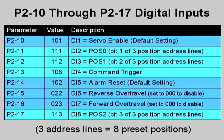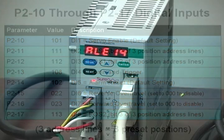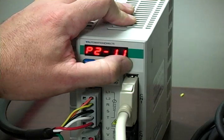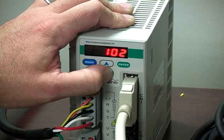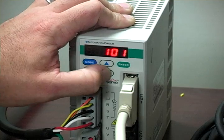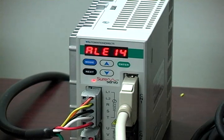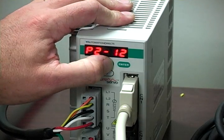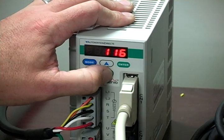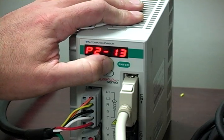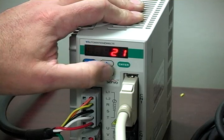We have wired our push buttons to inputs 2, 3, and 8, so we will need to set up those inputs internally in the drive. To configure digital input 2 as POS0, P211 will be set to 111. To configure digital input 3 as POS1, P212 will be set to 112. And to configure digital input 8 as POS2, P217 will be set to 113.